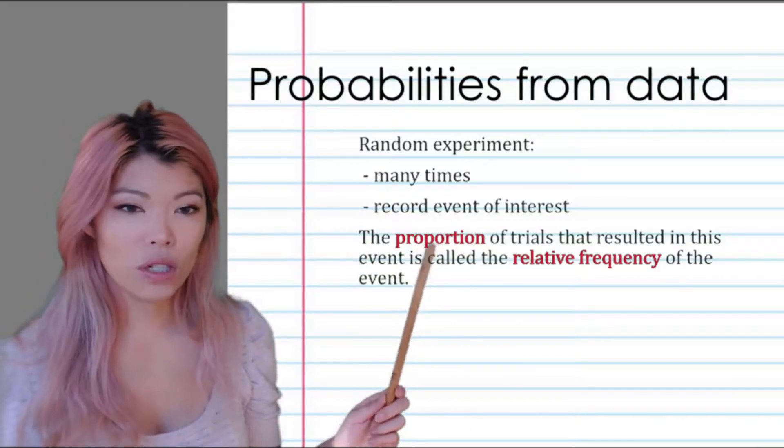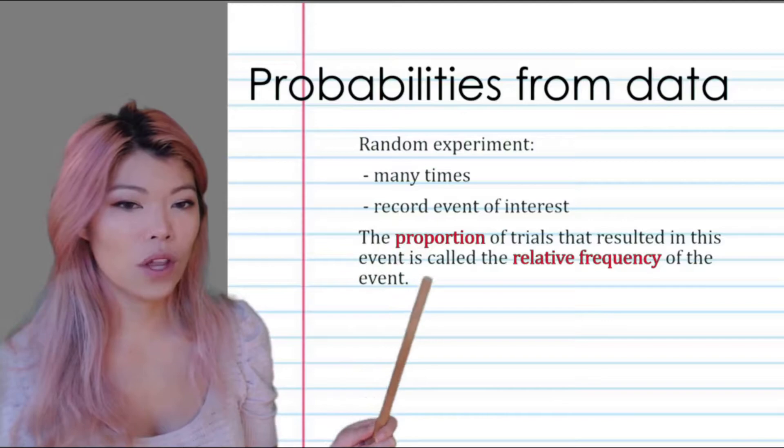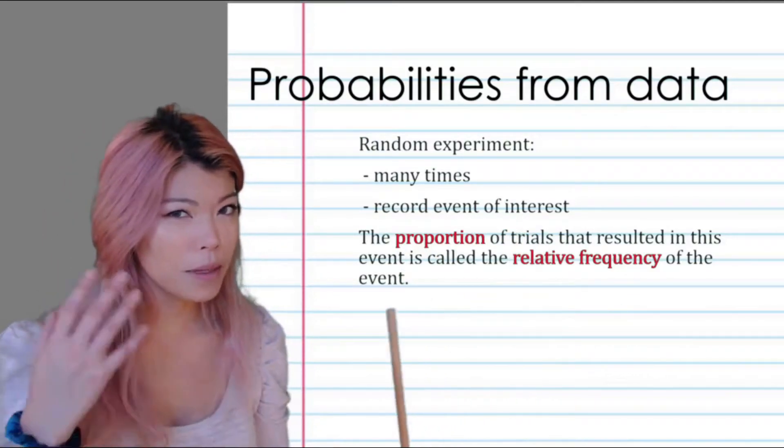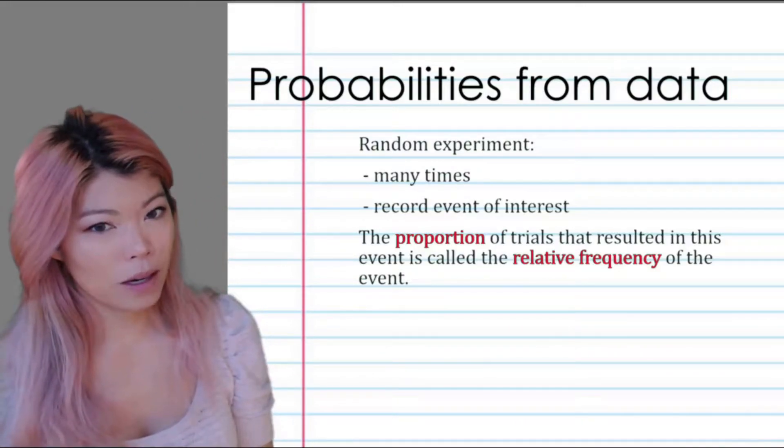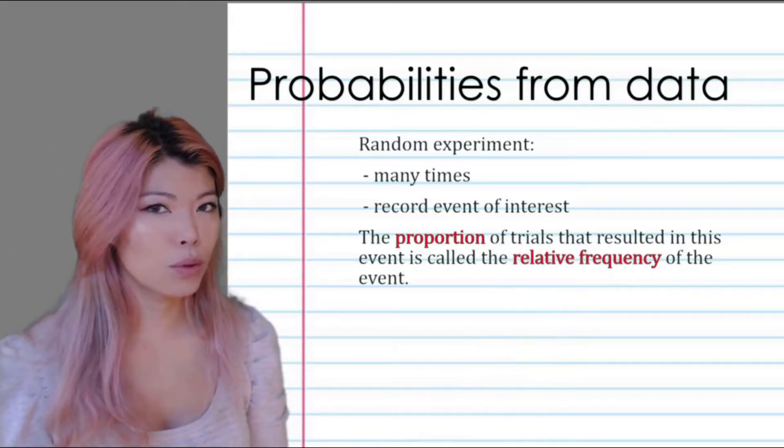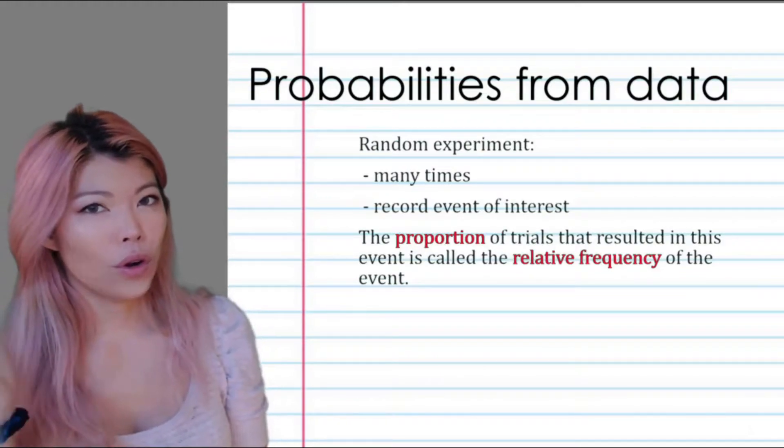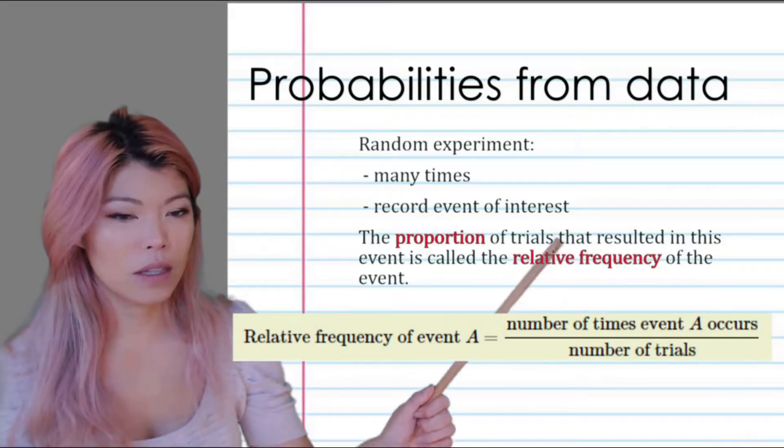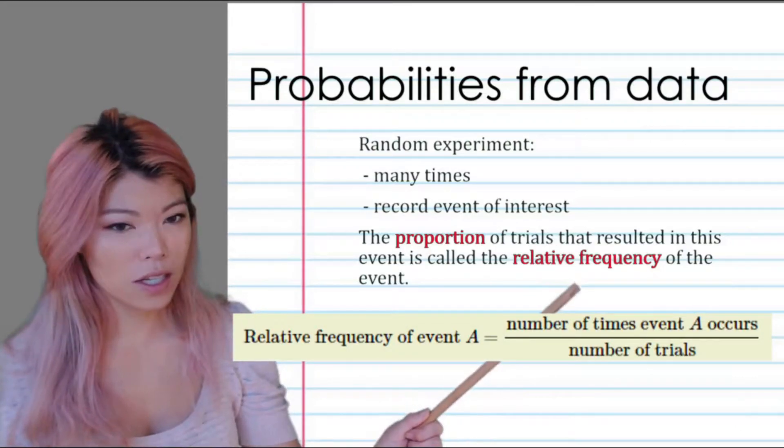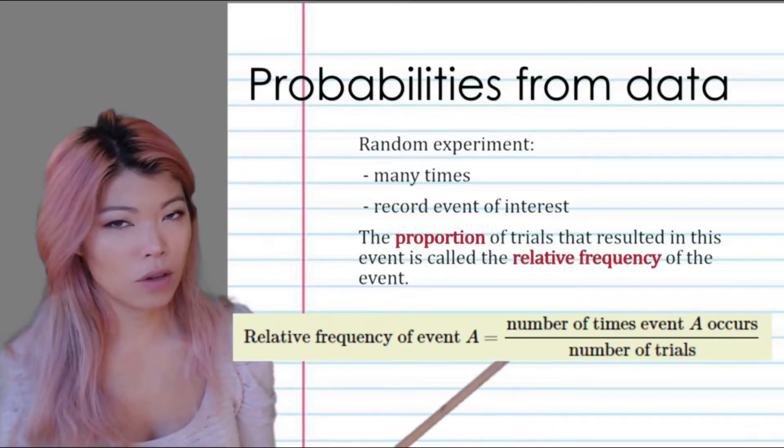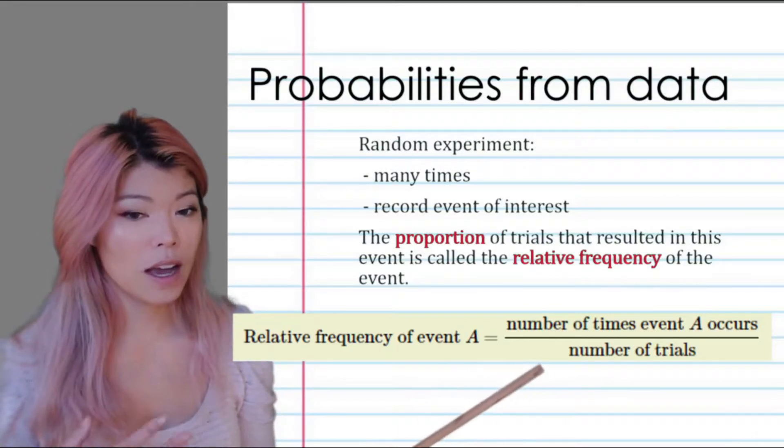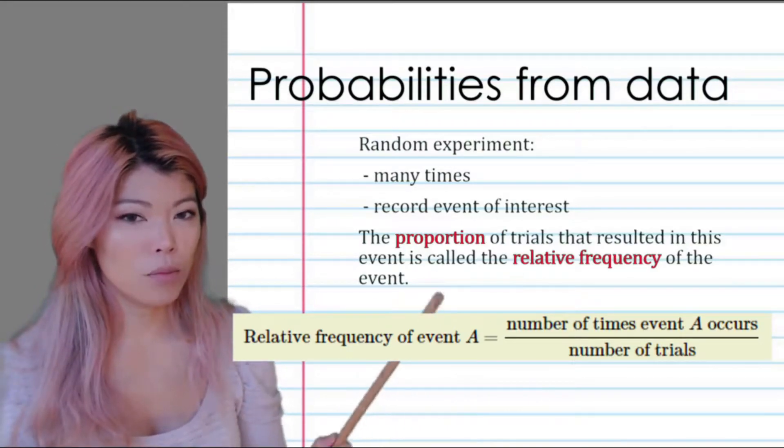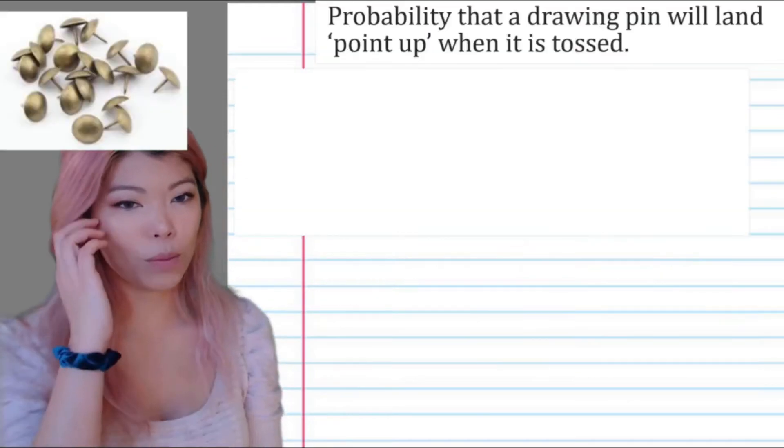This proportion of trials that resulted in the event is called the relative frequency of the event. Frequency is how often something happened. Relative frequency is us putting it as a fraction—it appeared 502 over 1000 times. Relative frequency is the number of times our event occurs over the number of times we did the experiment. We can see that the more trials, the closer it gets to the actual probability.